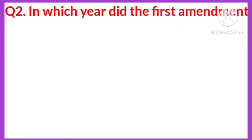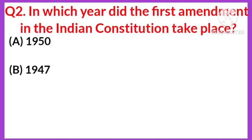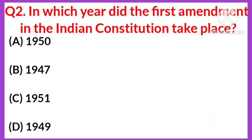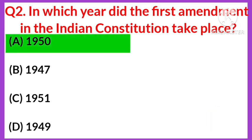Question number two: in which year did the first amendment in the Indian Constitution take place? Your options are: A) 1950, B) 1947, C) 1951, D) 1949. The right answer is option A, 1950.